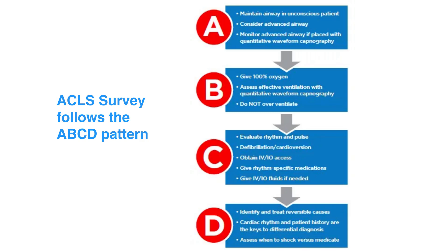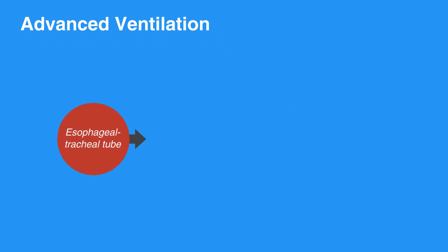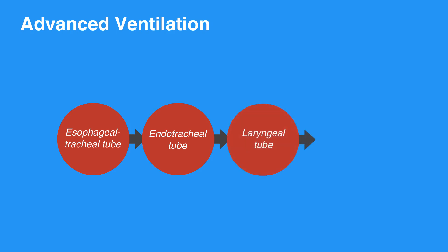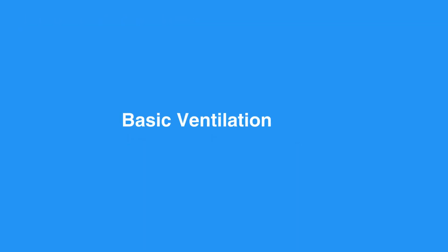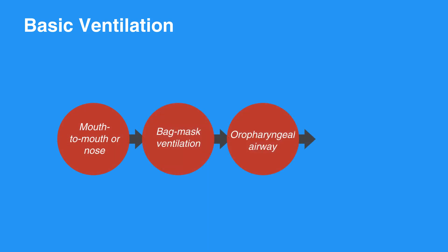When caring for individuals in respiratory arrest, keep in mind the two types of ventilation: advanced and basic. Advanced ventilation includes an esophageal tracheal tube, endotracheal tube, laryngeal tube, and laryngeal mask airway. Basic ventilation includes mouth-to-mouth or nose, bag mask ventilation, oropharyngeal airway, and nasopharyngeal airway.